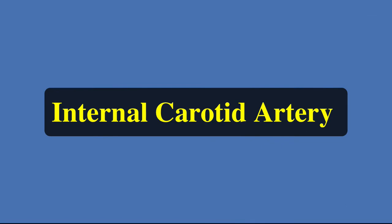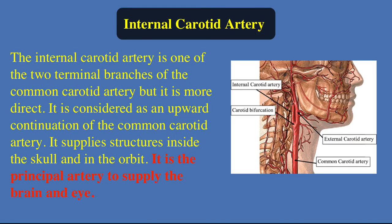Anatomy of the internal carotid artery. The internal carotid artery is one of the two terminal branches of the common carotid artery, but it is more direct. It is considered as an upward continuation of the common carotid artery. It supplies the structures inside the skull and the orbit, and is the principal artery to supply the brain and the eye.